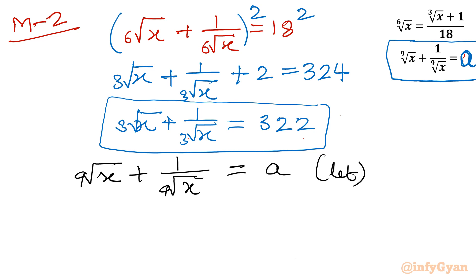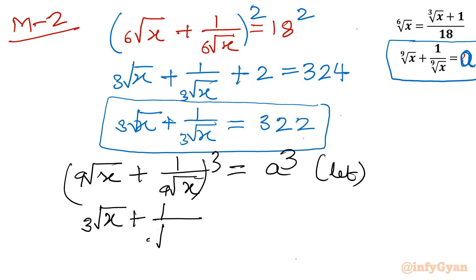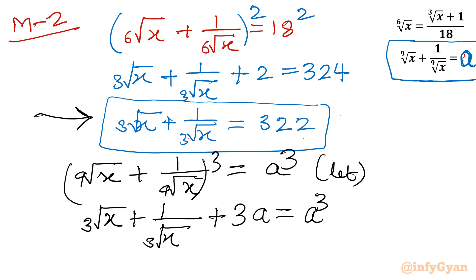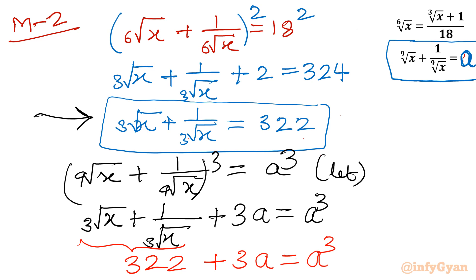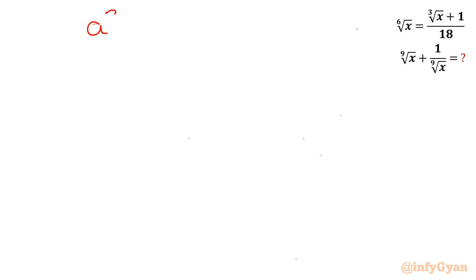Now let the 9th root of x plus 1 over the 9th root of x equal to a. I will cube both sides. The 9th root of x whole cubed becomes the cube root of x. Applying the (a+b)³ formula gives cube root of x plus 1 over cube root of x plus 3 times the 9th root of x times 1 over the 9th root of x, in bracket times the 9th root of x plus 1 over the 9th root of x, equal to a cubed. Substituting our known value gives 322 plus 3a equal to a cubed, so a cubed minus 3a minus 322 equal to 0.